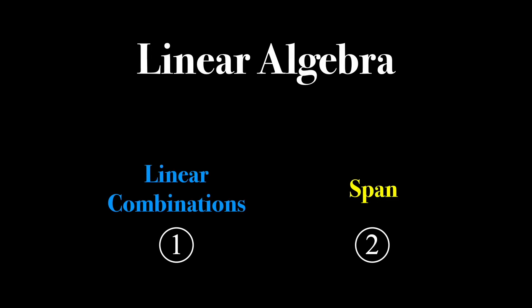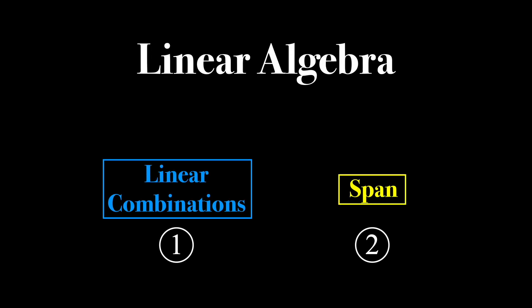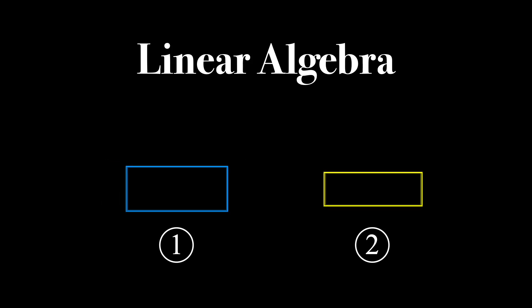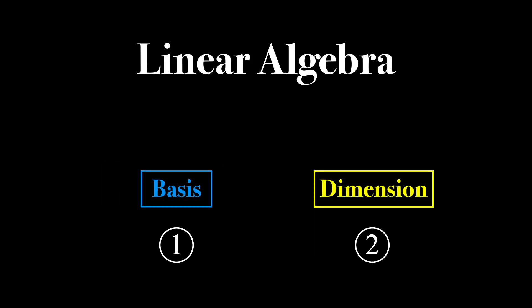Now that I've covered linear combinations and the span of a list of vectors, the next two fundamental concepts in linear algebra are the basis and dimension of a vector space. Let's tackle what a basis is first.